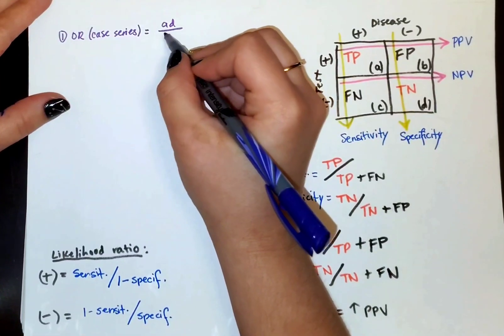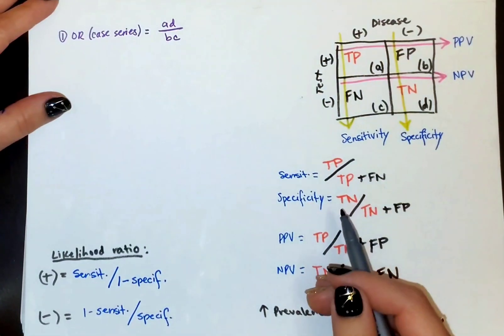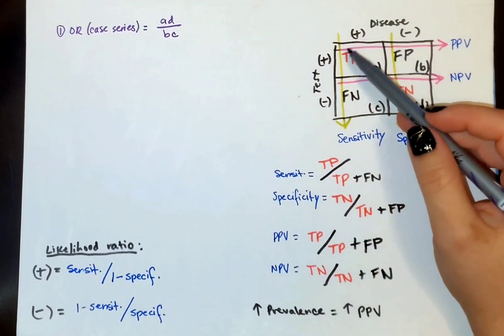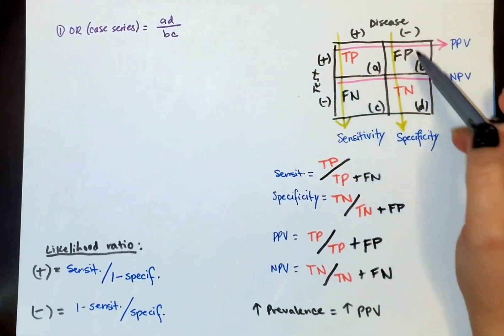So for this, the equation is just, you're just going to have to memorize it. There's really no trick. I just kind of remember to multiply the truths over the false.